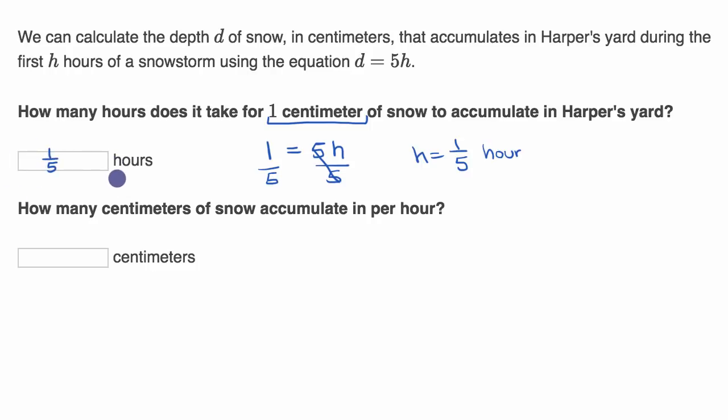If they had minutes there, then you would say, well, one-fifth of an hour, there's 60 minutes, it's 12 minutes, but they just want it as a number of hours, so one-fifth of an hour.